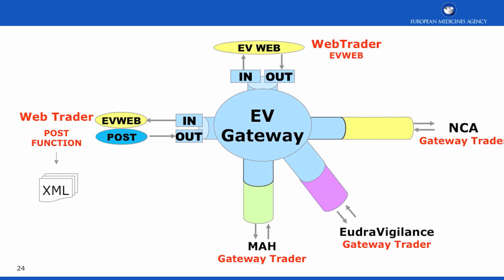This diagram shows the connection of organisations to the gateway. All organisations, regardless of whether they are gateway traders or web traders, can communicate with any of the parties connected to the central hub. A file being sent out from E2B R3 is directed to the intended recipient of that file.